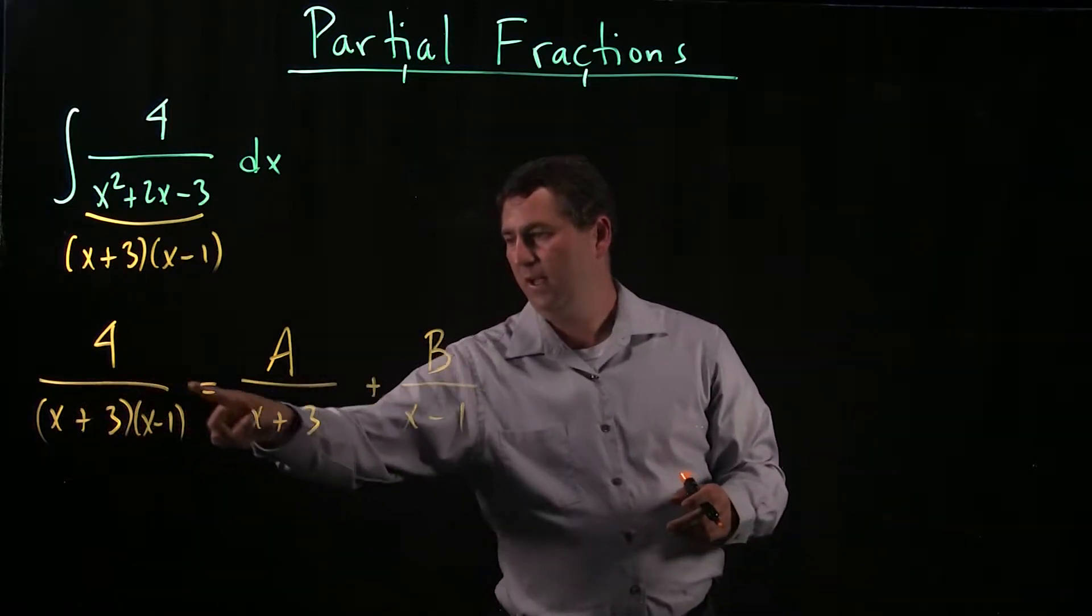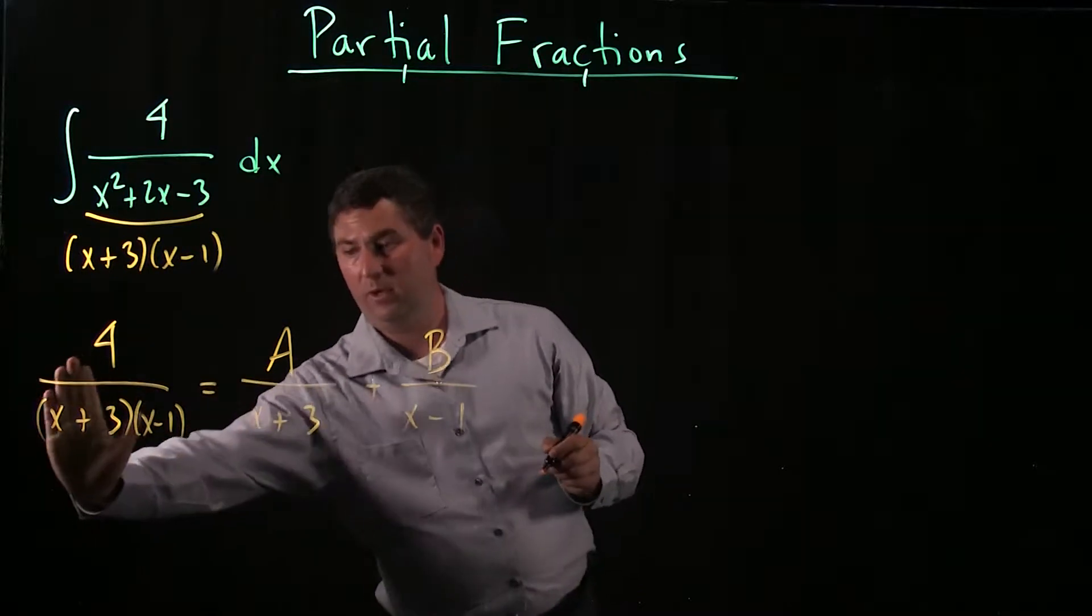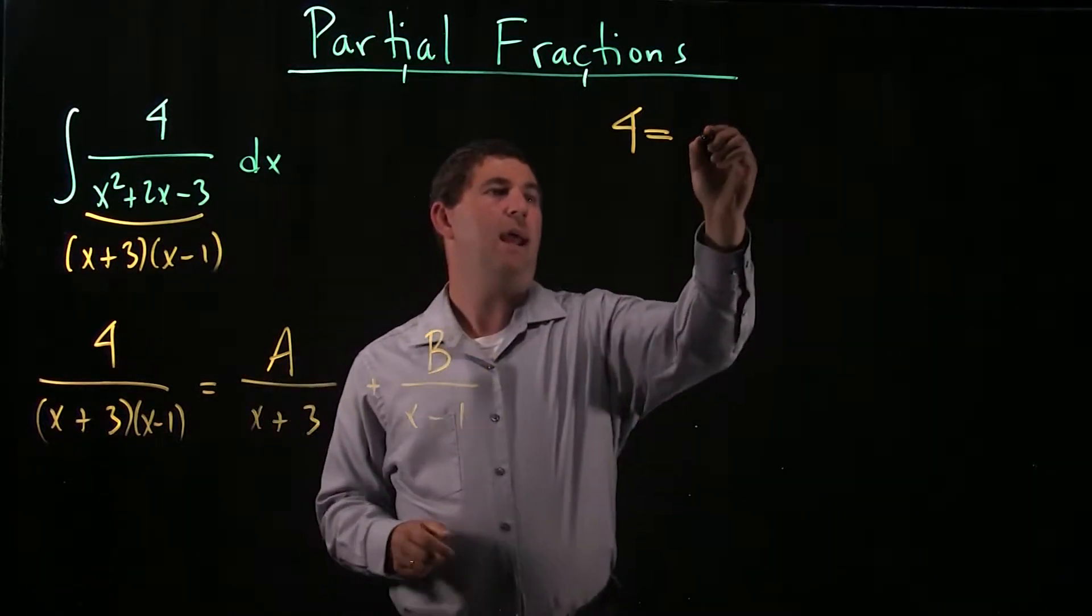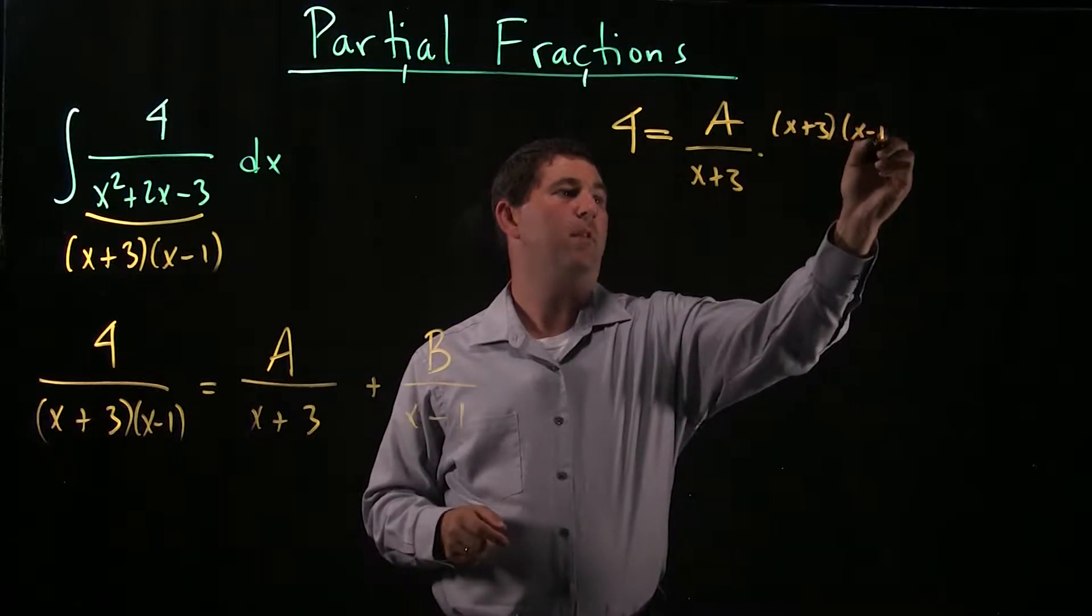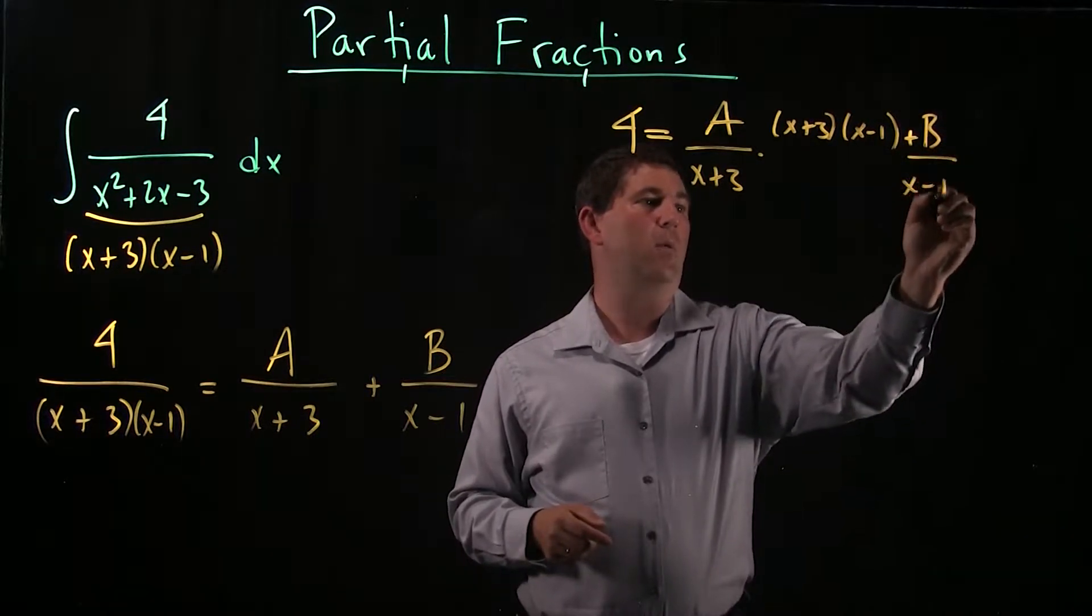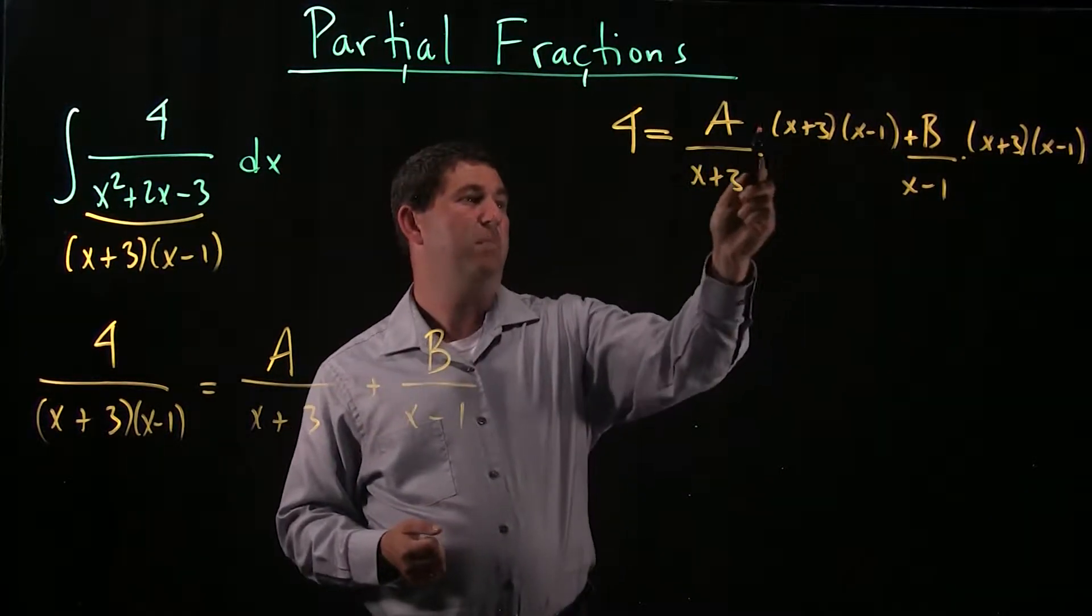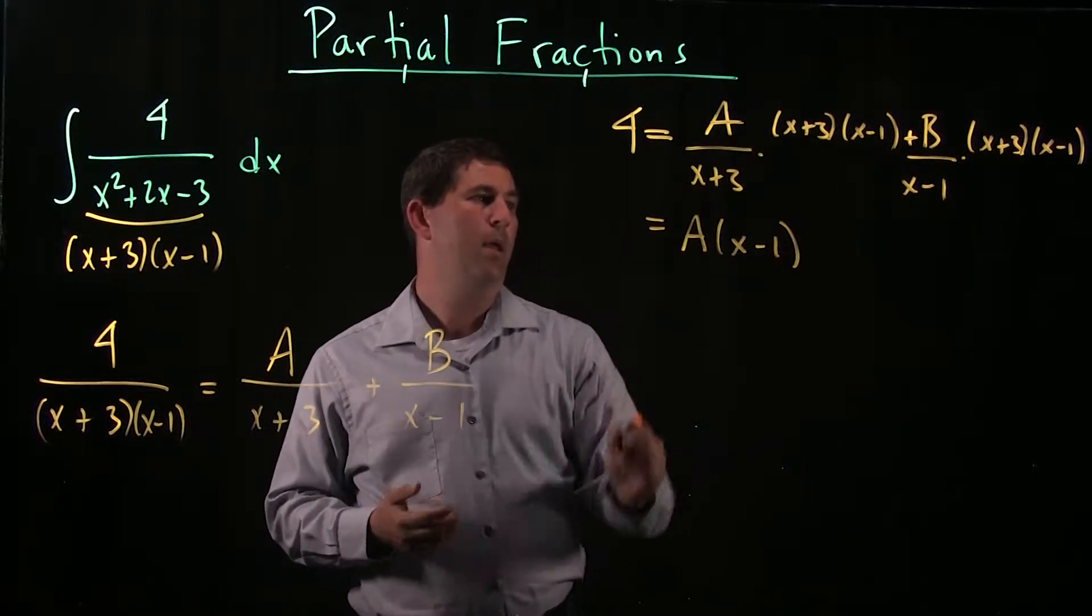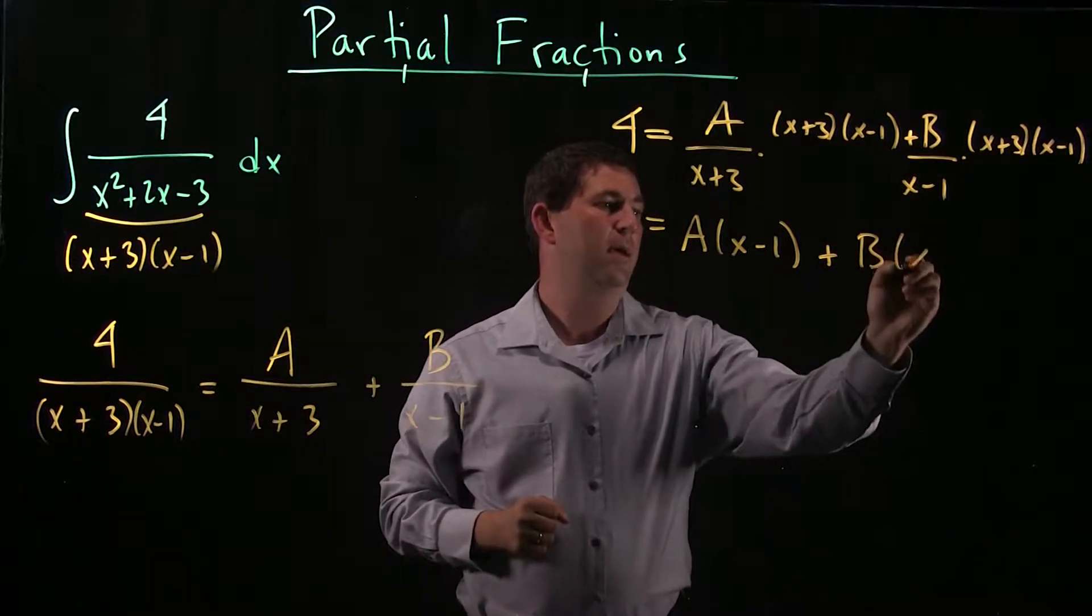So what I'm going to do first is multiply by x plus 3 times x minus 1. So when I multiply that on the left, it will just kill the denominator and I'm left with a 4. So I have 4 equals. And now on the right, I'll get a over x plus 3 times this denominator, x plus 3 times x minus 1. Of course, I also get this second term, so plus b over x minus 1 times x plus 3 times x minus 1. Now the cool thing you see here, I have an x plus 3 in the numerator and an x plus 3 in the denominator, those cancel. And so I'm left with a times x minus 1. And then on this second sum end, the x minus 1s are going to cancel. And so I'm left with b times x plus 3.